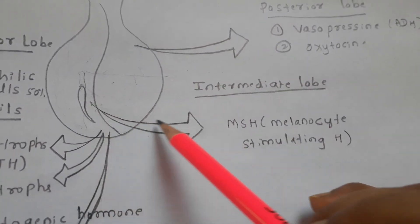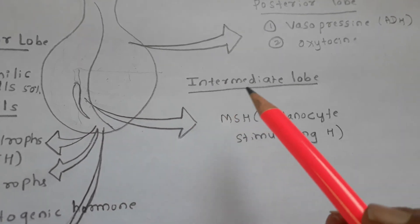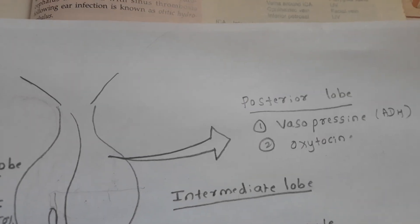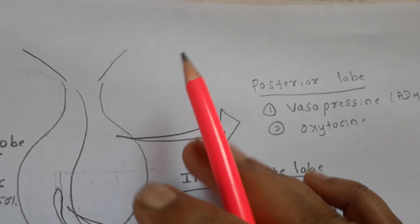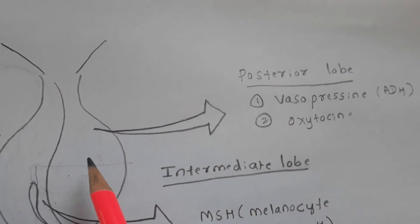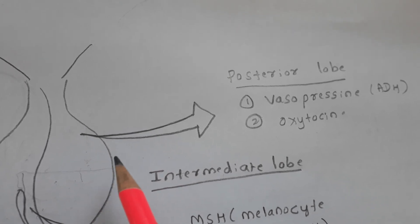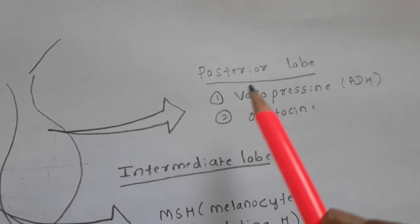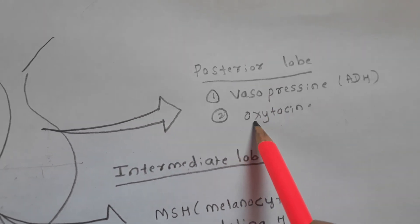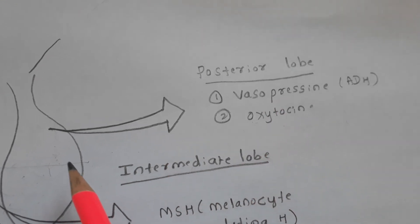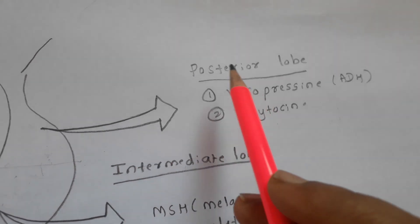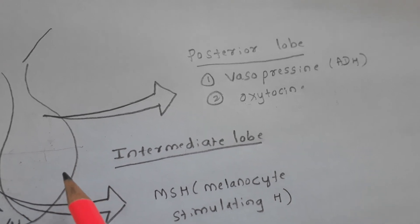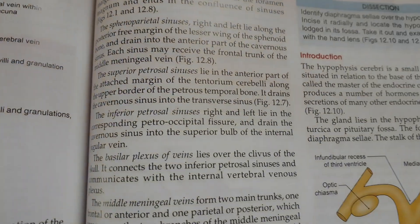The intermediate lobe secretes MSH, the melanocyte stimulating hormone. Regarding the posterior lobe, an important point to remember is that the posterior lobe does not have its own hormones — it carries hormones secreted by the hypothalamus. Vasopressin and oxytocin are not native hormones of the posterior lobe; they are secreted by the hypothalamus and then stored in the posterior lobe of the pituitary gland.